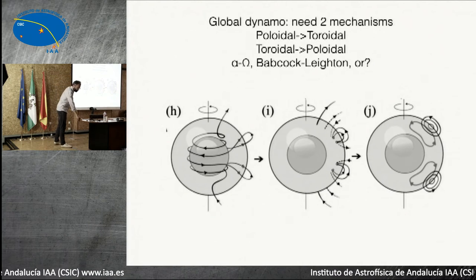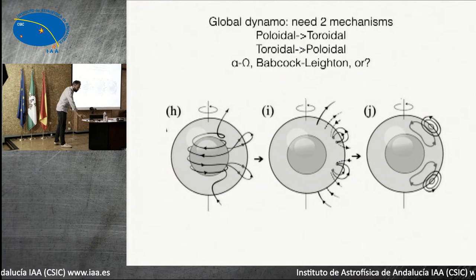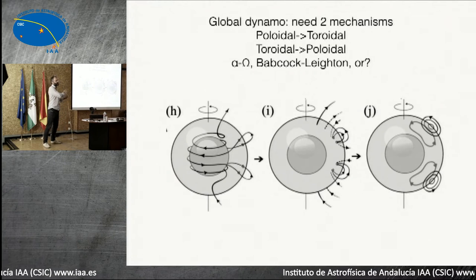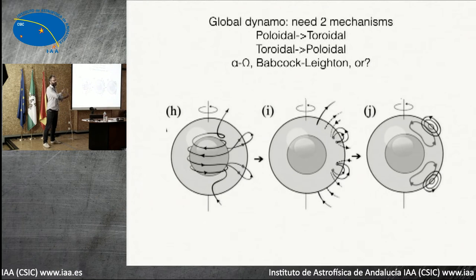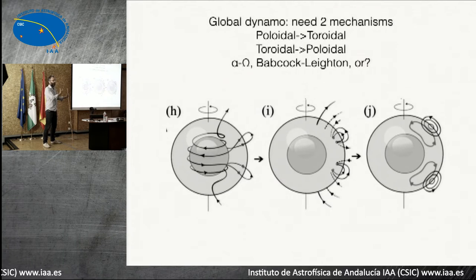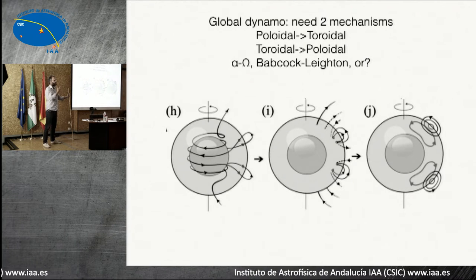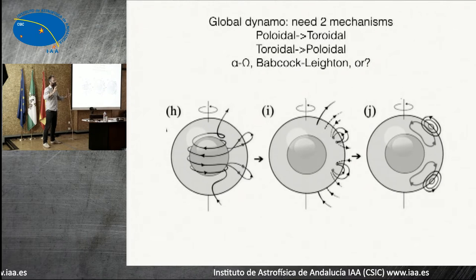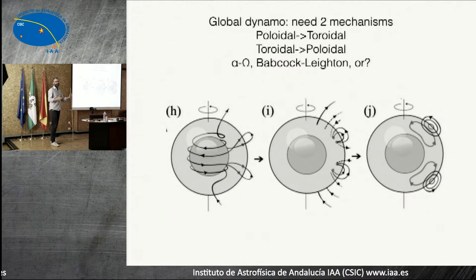In the Babcock-Leighton model, when field lines rise up through the convection zone and into the photosphere, there's a slight asymmetry due to the Coriolis force. Field lines close to the equator will diffuse across and destroy each other, while a little bit of polar field will preferentially go to the north and south poles and rebuild the poloidal field. It's at very low efficiency, but you don't need much efficiency to get it to work. This idea was thrown away in the sixties when Parker came with his idea, but now it's come back.